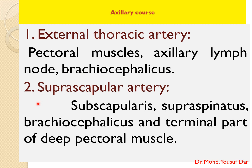The second branch arising from the axillary artery is the suprascapular artery. It is a collateral branch of the axillary artery and supplies the subscapularis, supraspinatus, brachiocephalicus, and the terminal part of the deep pectoral muscle.